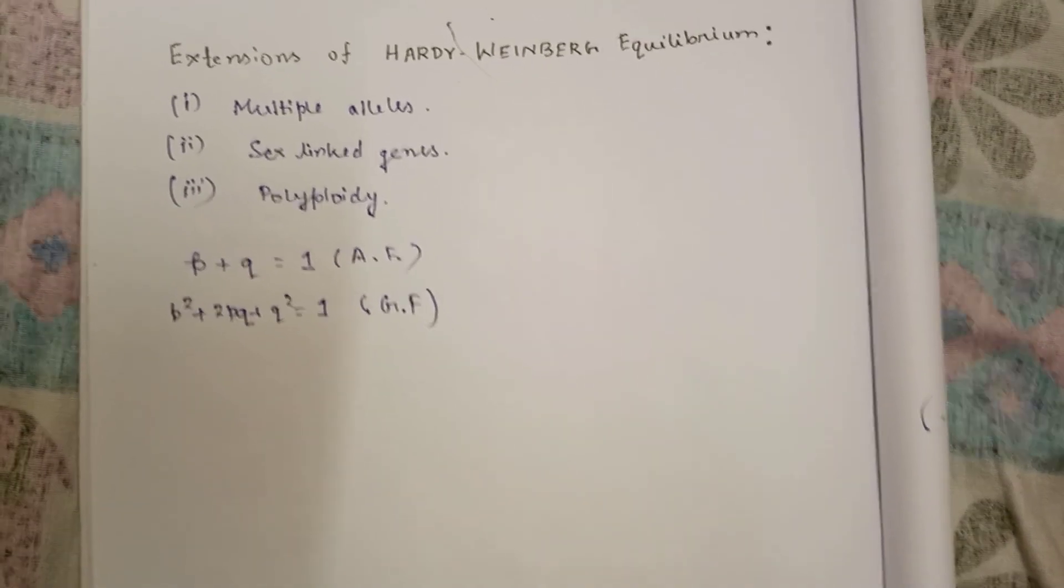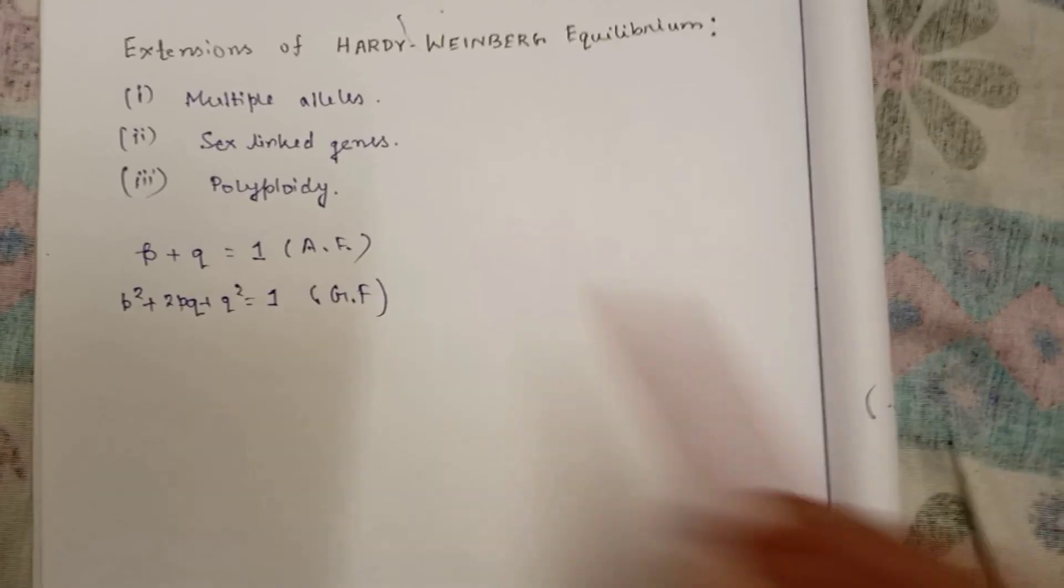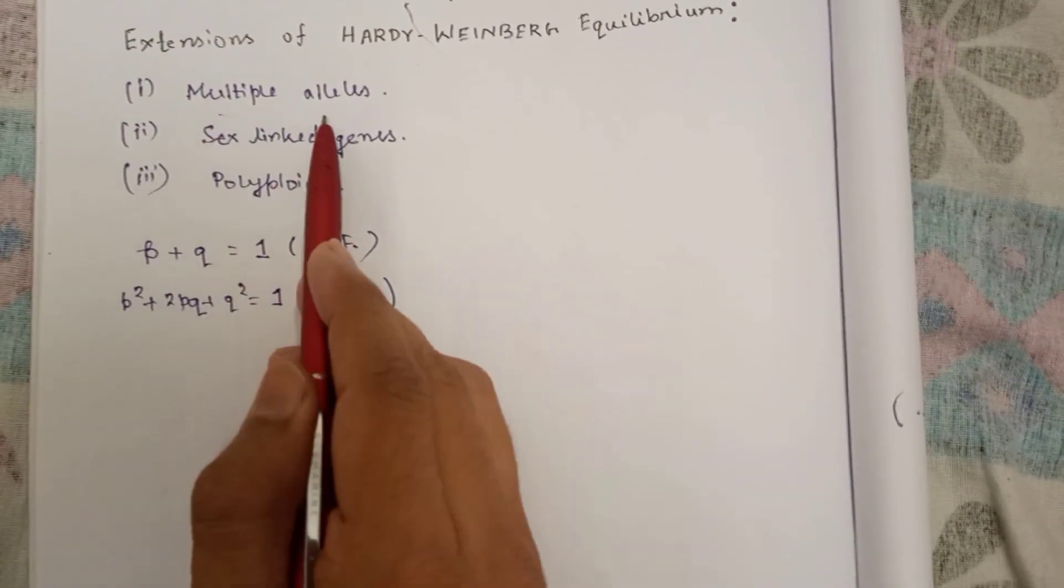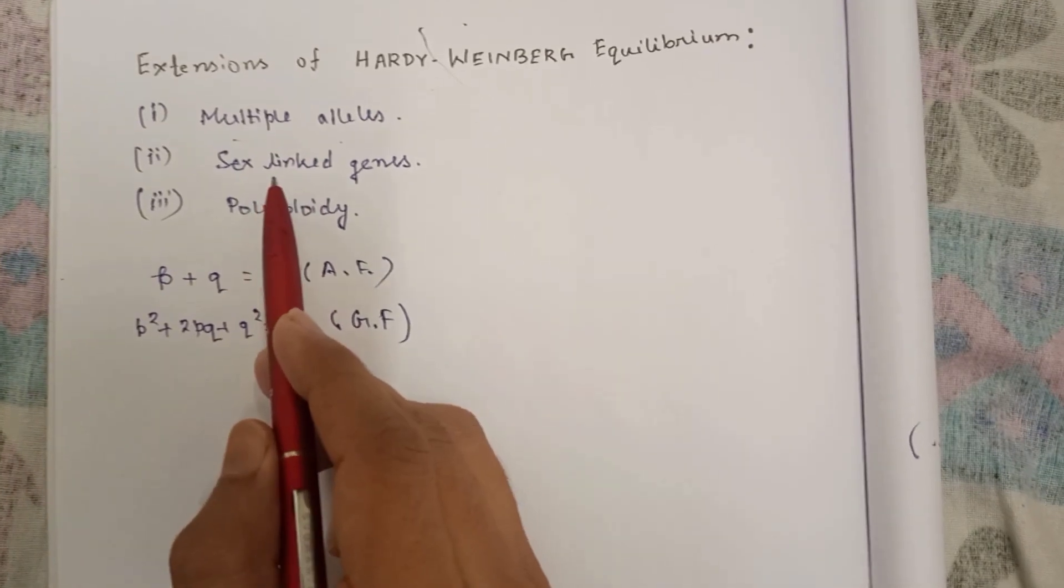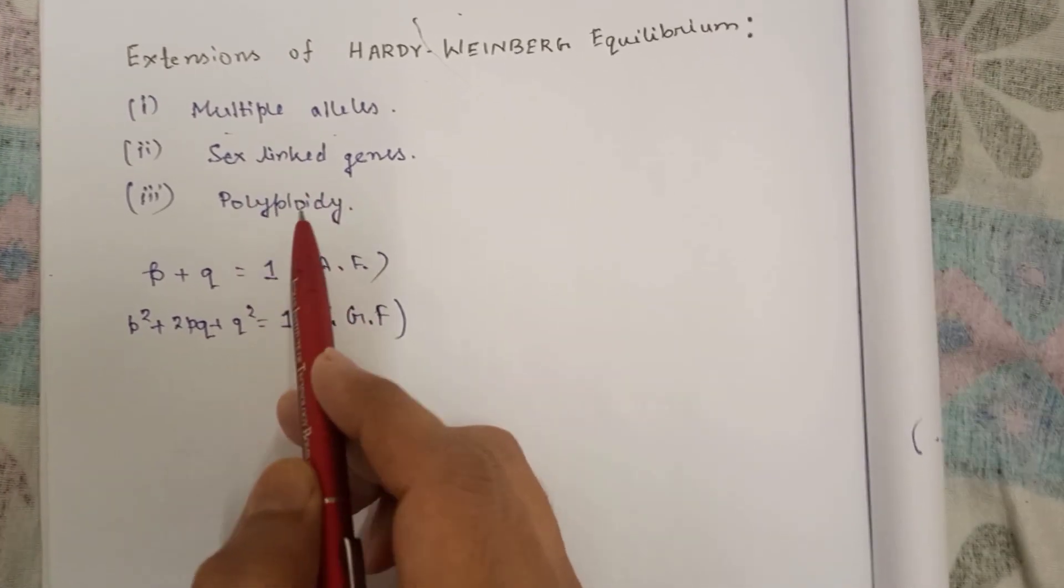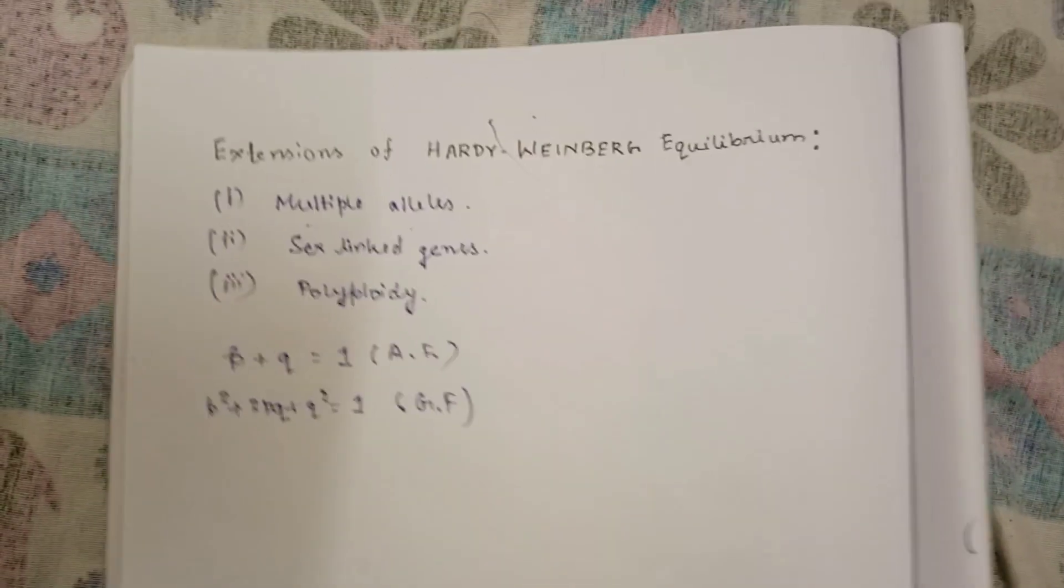Now we're talking about the extension, so it can be extended to three points: one, multiple alleles of an autosomal gene; it can be sex-linked genes, or it can be polyploidy.